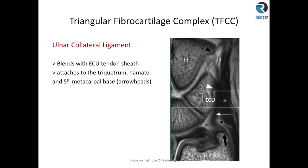The ulnar collateral ligament blends with the extensor carpi ulnaris tendon, hamate, and fifth metacarpal base, so it's a thin structure and can be difficult to separate from the extensor carpi ulnaris tendon. Some of its fibers attach onto the hook of the hamate, and onto the ulnar side of the hamate and ulnar side of the triquetrum.